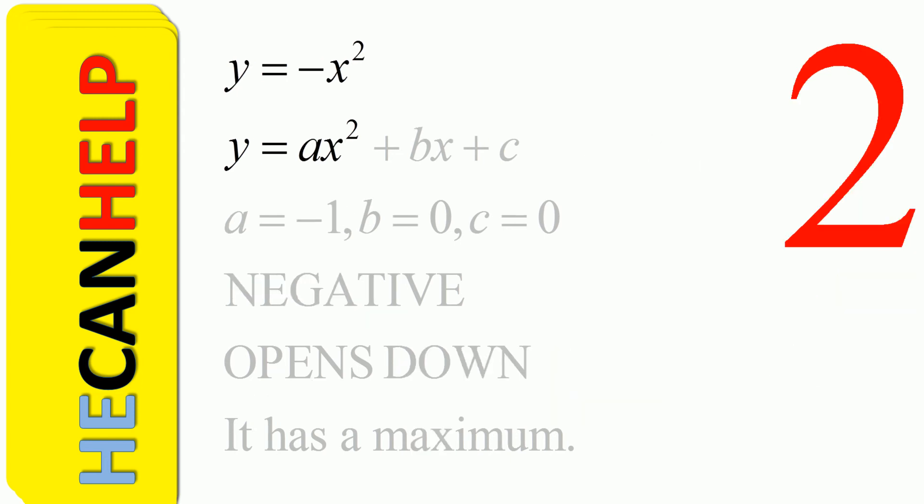At the vertex the y is minimum. So our graph opens up, so we have a minimum. Now if we are given negative x squared as the expression, then y is equal to ax squared plus bx plus c. If a is negative, this means negative.